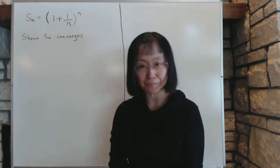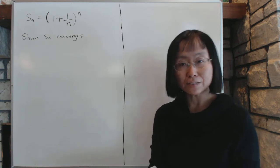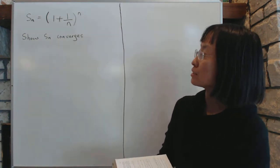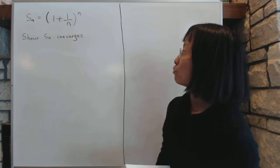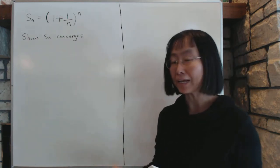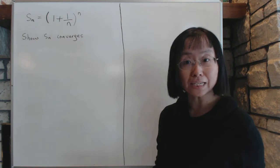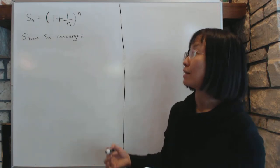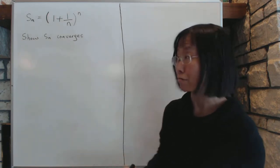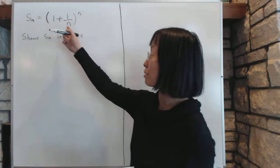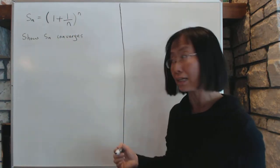Section 1.62: we continue with the limit of sequences and convergence. Now let's look at a very special sequence: 1 plus 1 over n, to the power n. This sequence converges to the number e, but we're not going to prove that right now. We're only going to prove that it converges without saying what it converges to. But it's good to remember that this is the sequence that gets you to e.